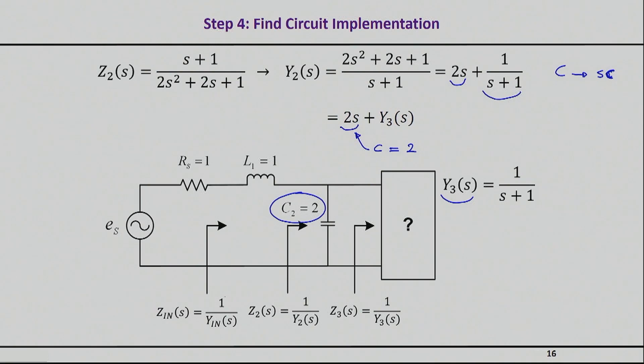Y3 is 1 divided by S plus 1. So again, instead of working with this guy, I will work with Z3, which is S plus 1 divided by 1. And again, it doesn't take much to see that this basically is S times another inductor L, whose value obviously will be 1, plus a real part, which will equal 1.